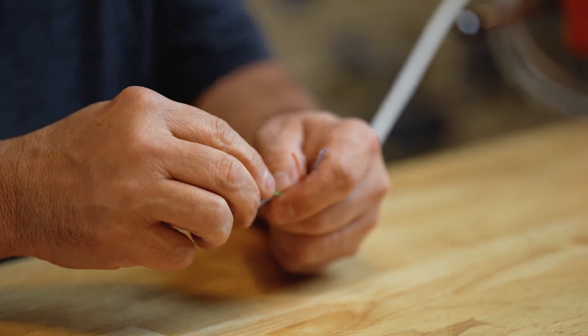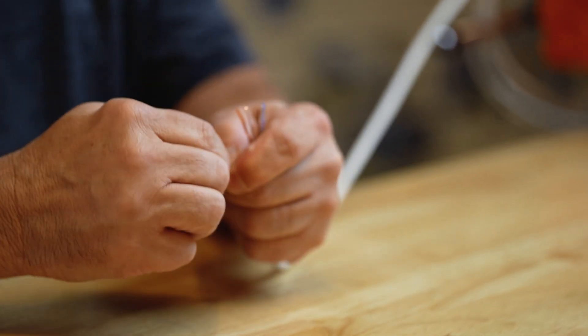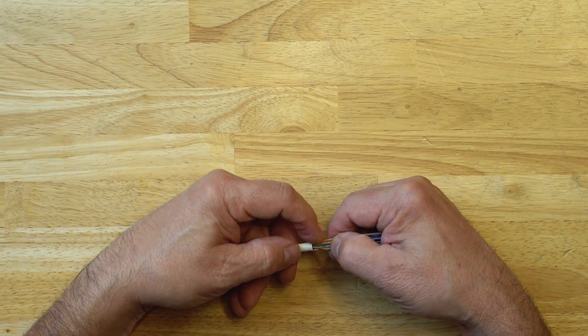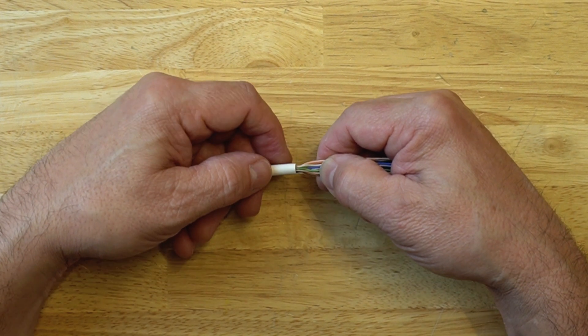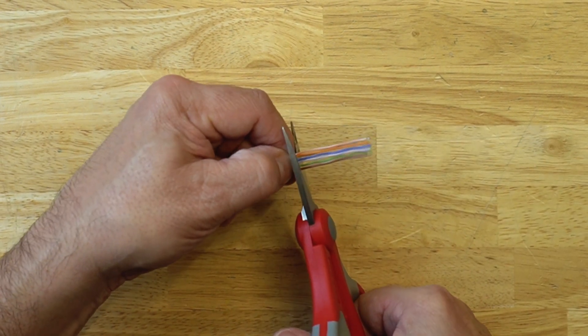The reason you want them straight is so that it makes it easier to put the connector on. After you've straightened the wires and oriented the wires, you want to cut the wires so that you only have a half inch of the wires exposed.